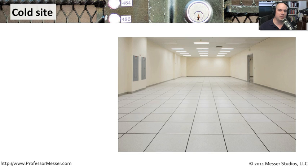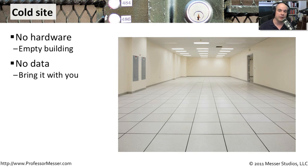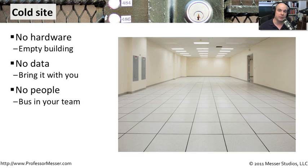If your disaster recovery location is a cold site, that means that it is essentially an empty building. There is probably some cooling systems and other facilities available, but there's really no hardware there waiting for you — no rack space. These are things that you would have to bring yourself should an emergency occur. Your data is not there either. You need to make sure that you have a way to get to your data backups and transport them to this cold site. You also have no people here generally, so you have to think about how you will get people from one facility to this backup disaster recovery facility so that you're able to keep your systems up and running.